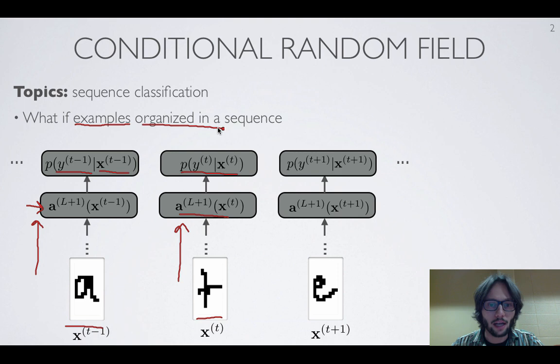Now imagine that we're facing a problem where the examples are organized in a sequence. In particular, if we're thinking of classifying images that correspond to handwritten characters, these characters probably belong to a word, and knowing what the previous character was might be helpful in identifying what the next character is.